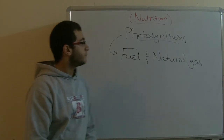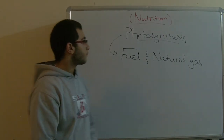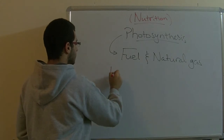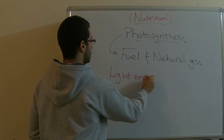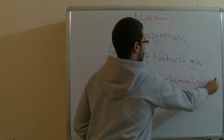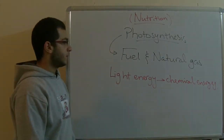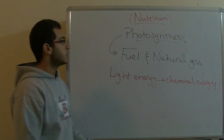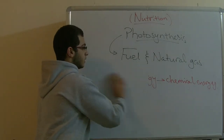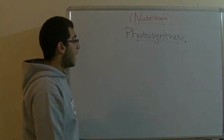So photosynthesis represents great importance for all living organisms on Earth, and we cannot imagine life without the transformation of light energy into chemical energy. This is the importance of photosynthesis mentioned at the beginning of this part in our chapter. Now let's talk about another thing, after knowing the importance of photosynthesis for humanity and all other living organisms.